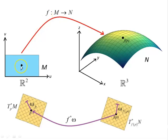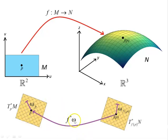We have a map that takes points in M, such as point P, to N, such as point F(P). At each point P we have the cotangent space, and at the point F(P) we have the cotangent space to the manifold N at the point F(P) — T* indicating the cotangent or dual space. The pullback of omega under the map F, indicated F* omega, takes a two-form in the cotangent space over N and pulls it back to a two-form over M.